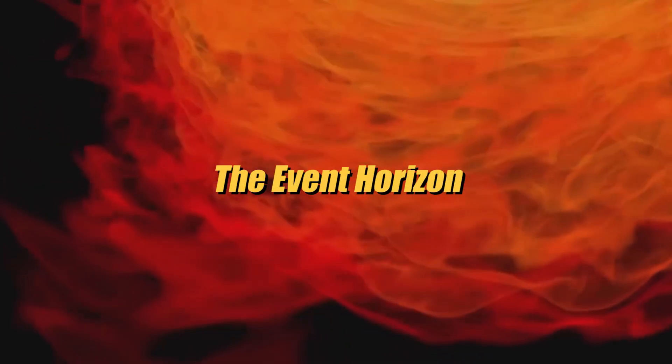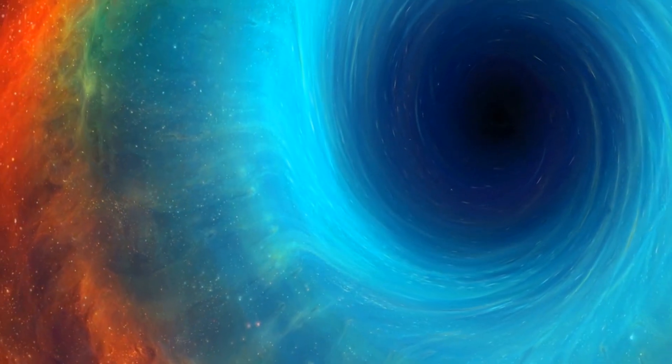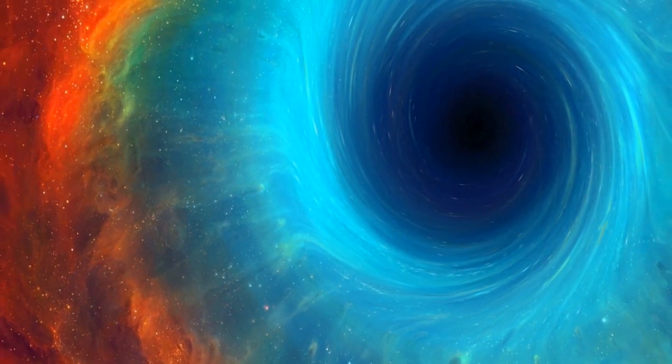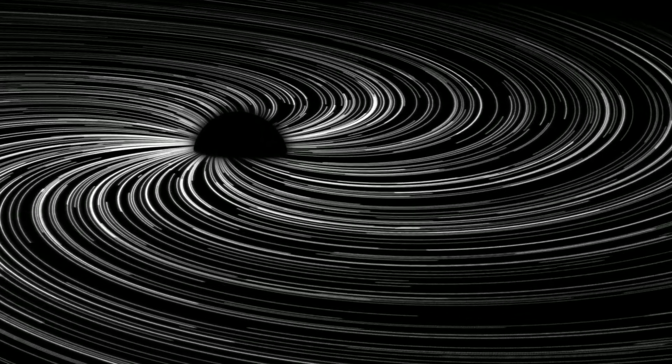The first layer is known as the event horizon, which is the point of no return. Once the event horizon is crossed, there is no turning back. The second layer is the photon sphere, which is the region where light orbits around the black hole. Any light entering this region will be trapped and will not be able to escape the gravitational pull of the black hole.